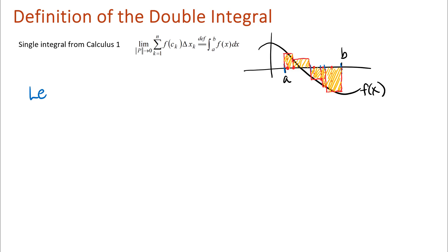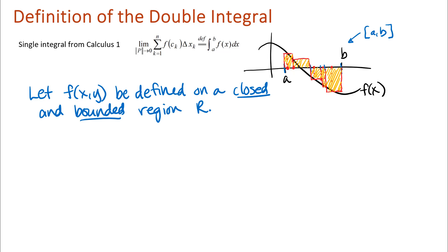The first thing is that we need to start with a function f(x, y) defined on a region. In calculus 1, the region was a closed and bounded interval from a to b. For this multivariable function we want the same idea: the function defined on a closed and bounded region R in the xy-plane, which is the region we integrate over.